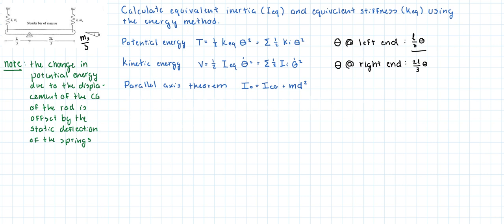So what the energy method says is that the potential energy is equal to one half times the equivalent stiffness times the displacement squared. The way that we're going to do this is that we're going to sum up all of the potential energy terms of the system and bring them together so that it has this form. We're going to say that what's in between one half and the displacement squared is equal to the equivalent stiffness.